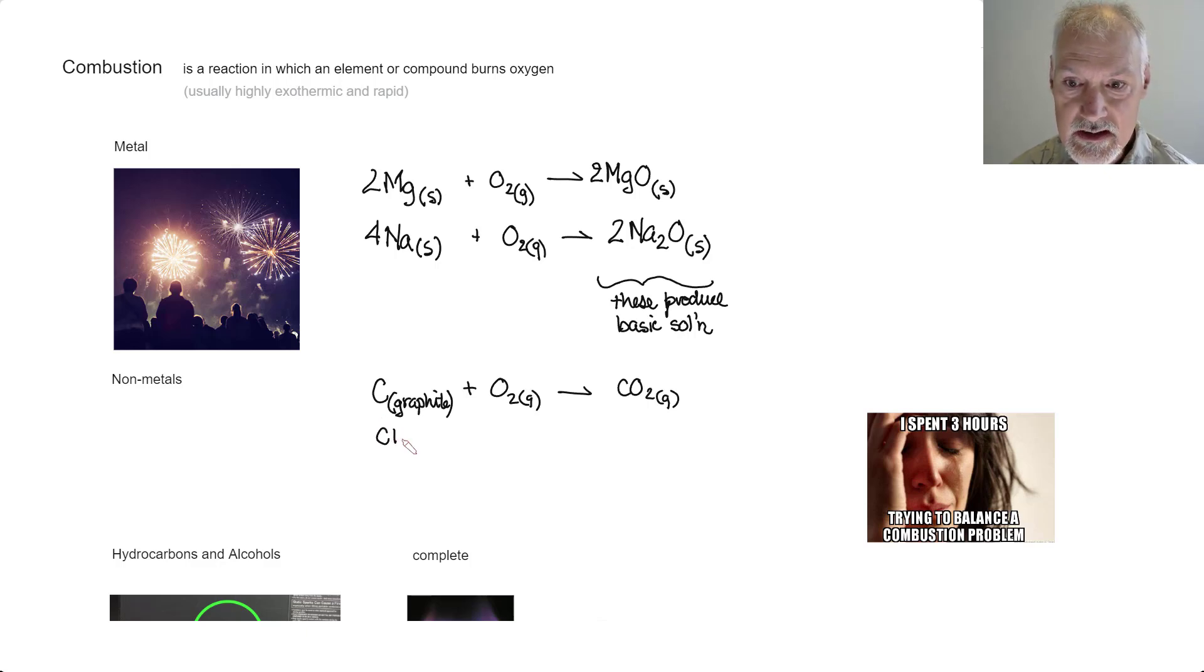So let's look at taking chlorine, which is a gas, and burning it with oxygen. That'll produce Cl2O, oxygen dichloride. And it's a gas. To balance this one, I think I'll need a two here and a two here.